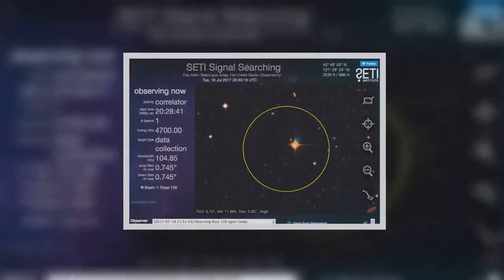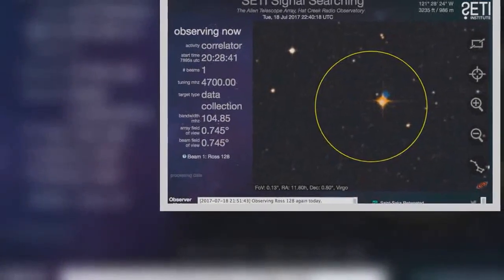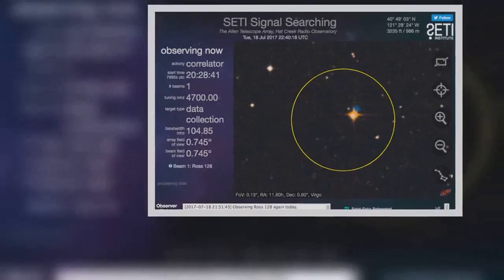Of the smaller contingent of Earth-sized planets, the vast majority orbit red dwarf stars, the most common type in the Milky Way.